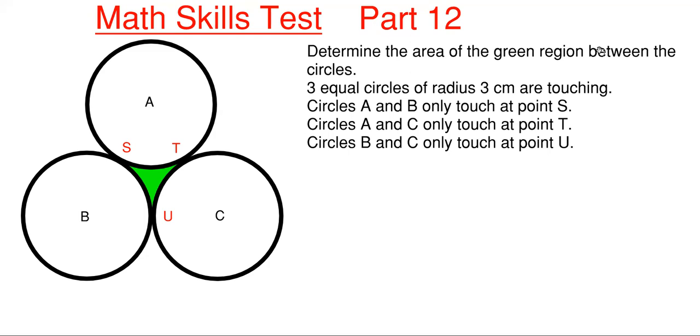So what we're going to do is determine the area in green between these circles shown on the screen. We are told that we have three equal circles of radius 3 centimeters that are touching each other. So we have circle A, B, and C with each a radius of 3 centimeters. Circle A and B only touch at point S, circles A and C only touch at point T, and B and C only touch at point U.